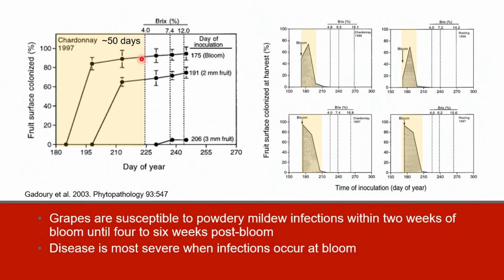When inoculated at bloom, 80 percent of the surface of a cluster was colonized. When inoculated at two millimeters, around 60 percent was colonized. However, once the fruit reached the three millimeter size, essentially no disease occurred. The graph on the right shows that the infection period is consistent between cultivars and from year to year — Chardonnay and Riesling both showed similar infection periods in 1996 and 1997. The fact that this critical period for infections is predictable allows for strategic timing of management strategies.